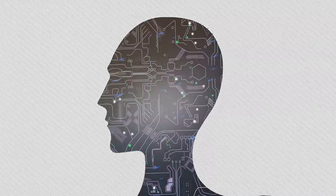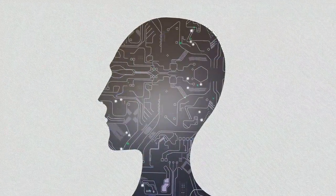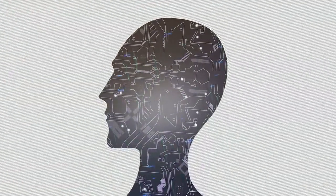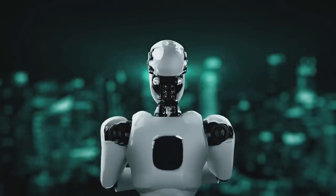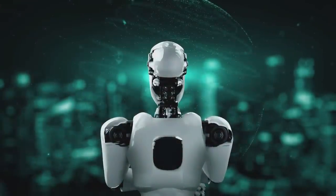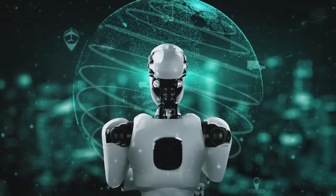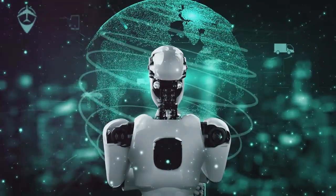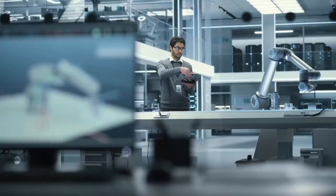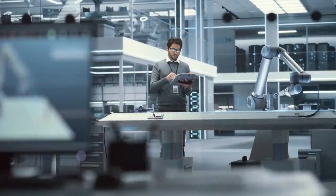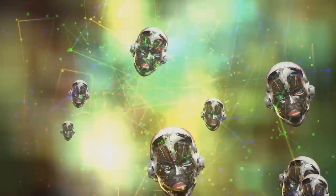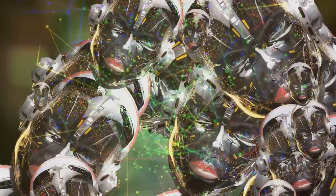Have you ever wondered how machines learn to think? How they adapt to their environment, learn from their mistakes, and perform tasks with such precision? These questions have driven centuries of innovation, leading us to the intersection of two fascinating fields: artificial intelligence and robotics. When we say robotics, we're not just talking about the creation of mechanical beings. It's a complex blend of artificial intelligence and mechanical engineering — a marriage of mind and machine that's reshaping our world in ways we could only dream of a few decades ago. From the assembly lines of car manufacturing plants to the sterile environments of operating rooms, robots are not just present — they're pioneering change.